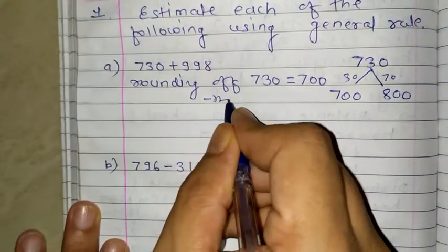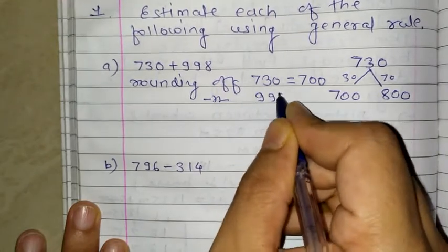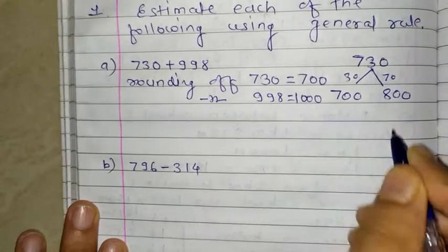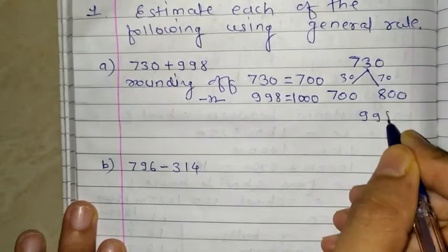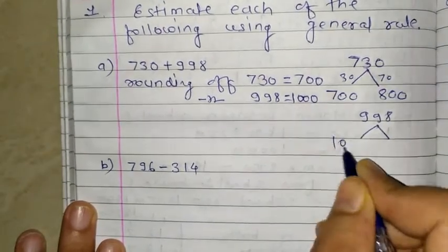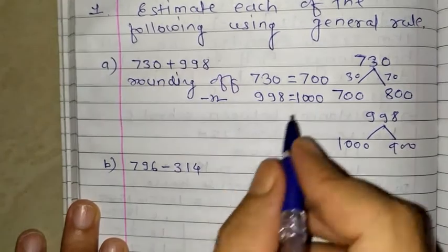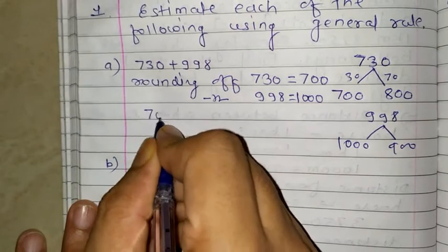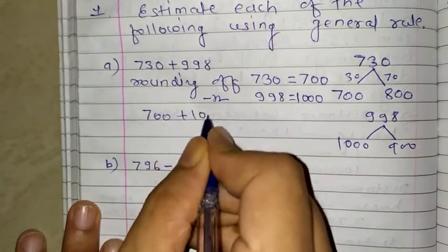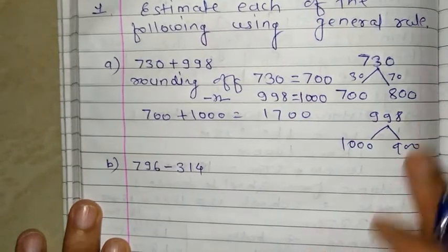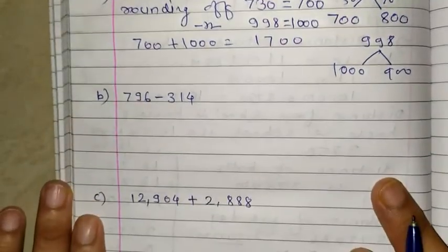You can write here rounding of 730 is 700. Next number, rounding of 998 is nothing but 1000. If you see that number it is in between 1000 and 900, more closer to 1000. Then you do addition, it is 1700. This is the estimate value.